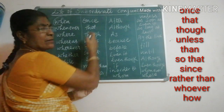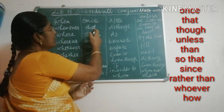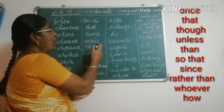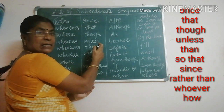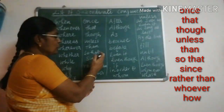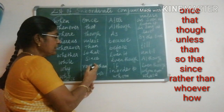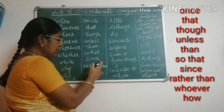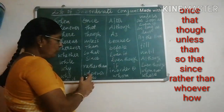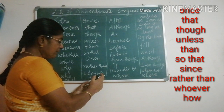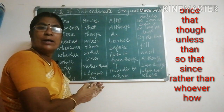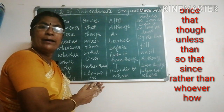Once, that, though, unless, than, so that, since, rather than, whoever, how. These are all subordinate conjunctions.